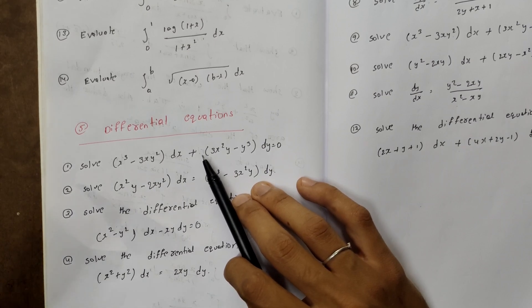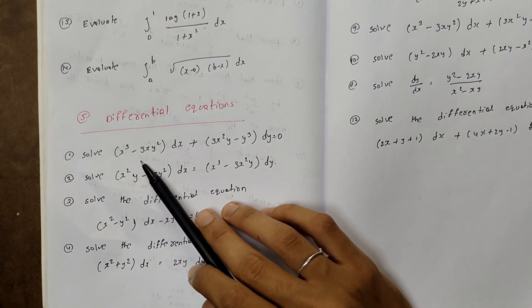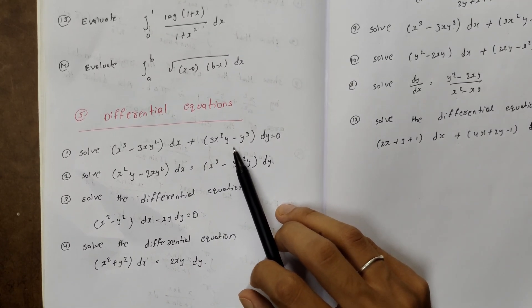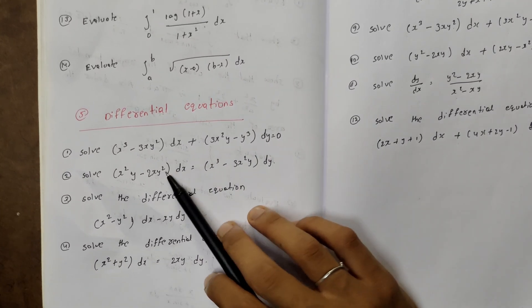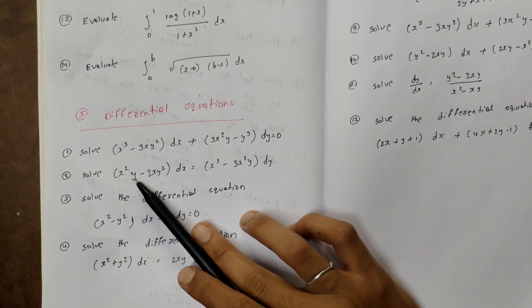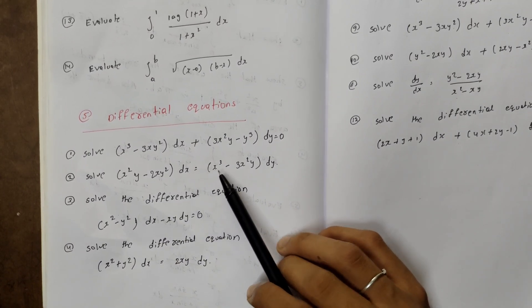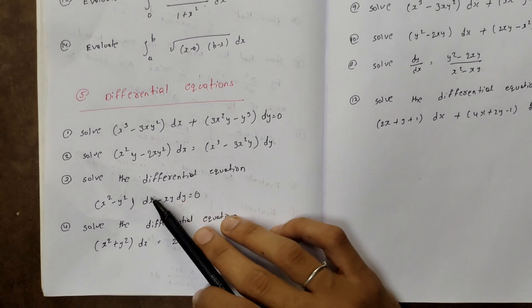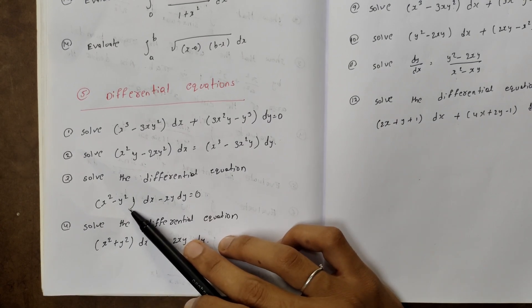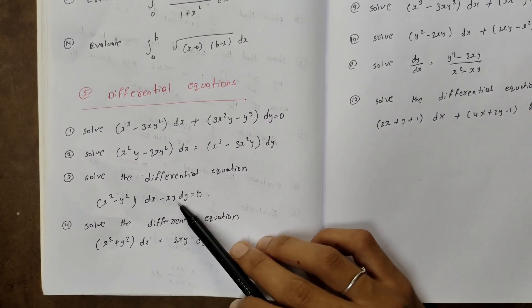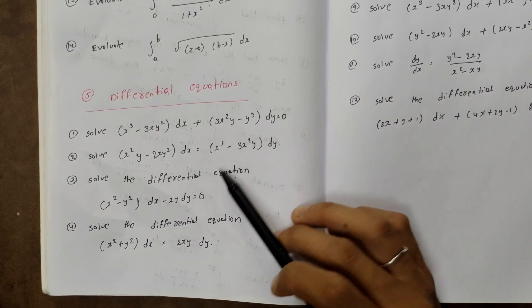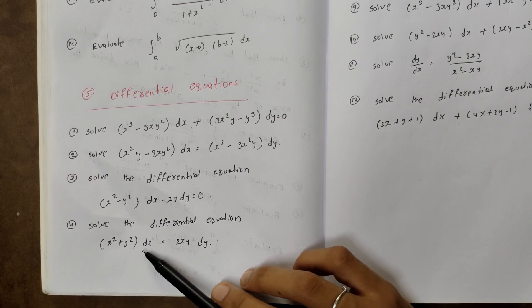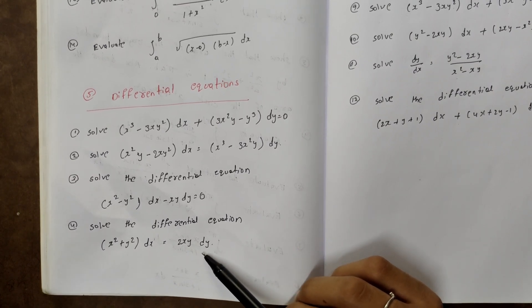Differential equations: Solve (x³-3xy²)dx+(3x²y-y³)dy=0. Solve (x²y-2xy²)dx = (x³-3x²y)dy. Solve (x²-y²)dx - xy·dy=0. Solve (x²+y²)dx=2xy·dy.